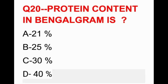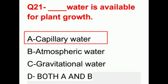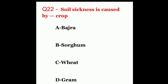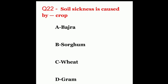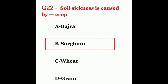Question twenty: protein content in Bengal gram is. The options are 21%, 25%, 30%, or 40%. The correct answer is 21%. Question twenty-one: which water is available for plant growth? The options are capillary water, atmospheric water, gravitational water, or both A and B. The correct answer is capillary water. Question twenty-two: soil sickness is caused by which crop? Options are bajra, sorghum, wheat, or gram. The correct answer is sorghum.